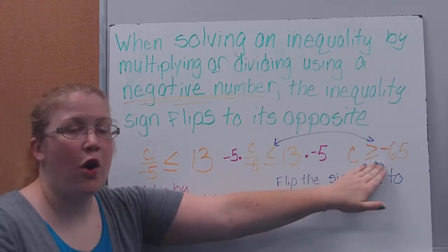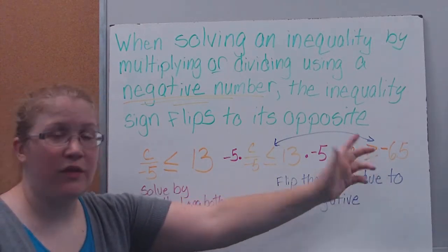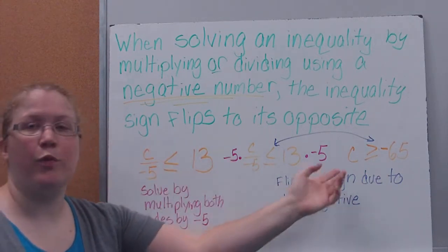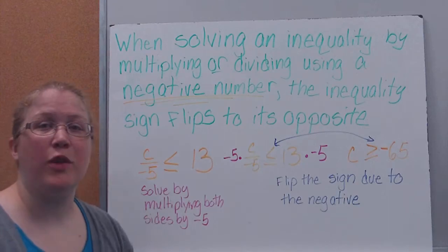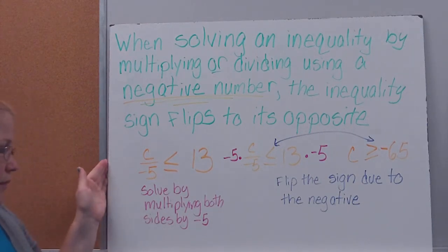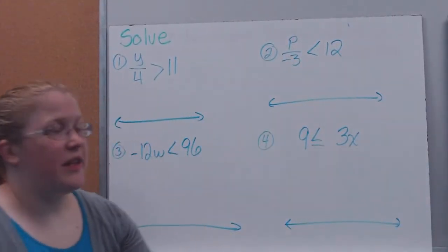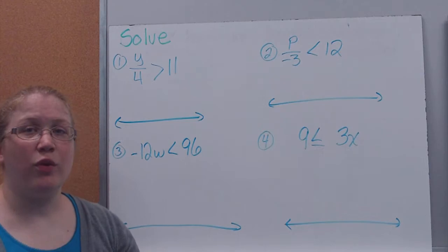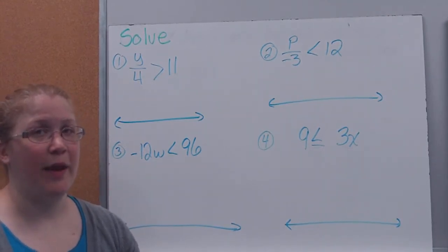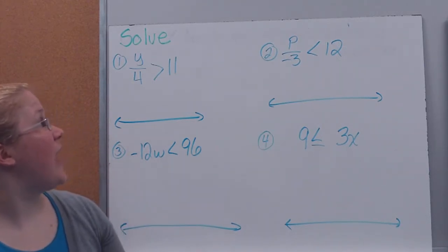You can always go back and check to make sure you've flipped your sign the right way. If you didn't flip correctly, you'll wind up with an untrue statement, which will remind you that you needed to flip because you were multiplying or dividing by a negative. Remember, that rule of flipping is only when we're multiplying or dividing by a negative, not by a positive — so we don't always flip the sign.